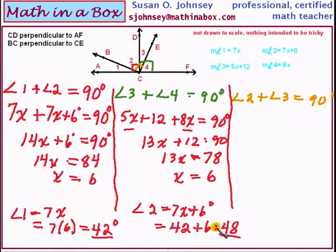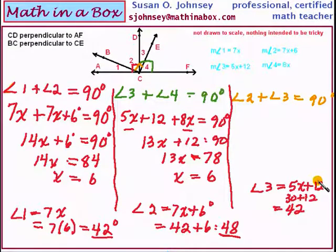Angle 3 will be 5x plus 12. Remember that our x is 6, 6 times 5 is 30, so 30 plus 12 is 42. So angle 3 is 42. Notice that is the same as angle 1. I wonder if angle 4 is going to be equal to angle 2. Angle 4 is 8x, 8 times 6 is 48, yes it is.